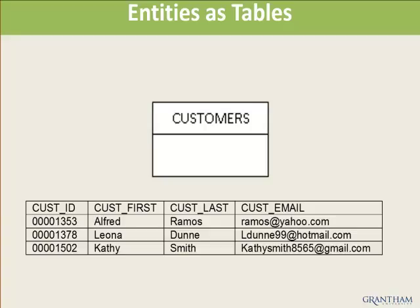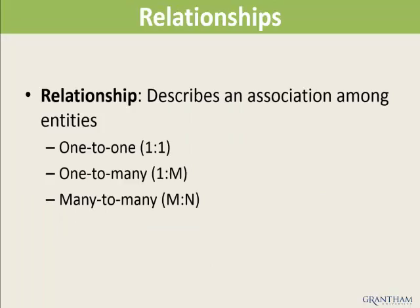The table representation may also include characteristics of attributes such as data types and keys. Relationships are connections or associations between database tables. A relationship matches data and fields, usually a field with the same or a similar name. There are three types of relationships: one-to-one, one-to-many, or many-to-many.